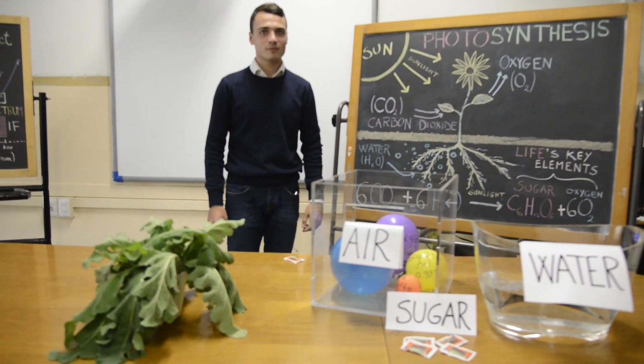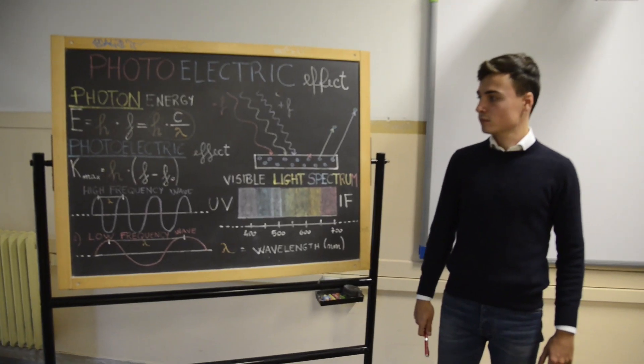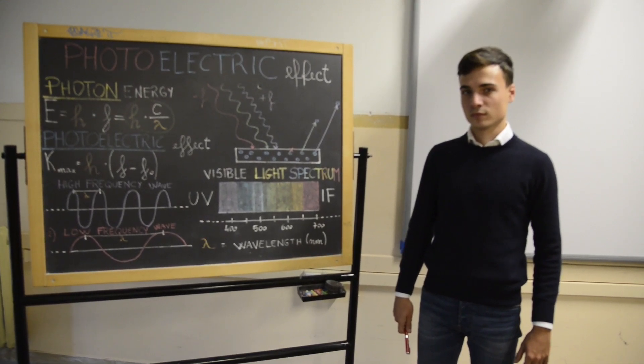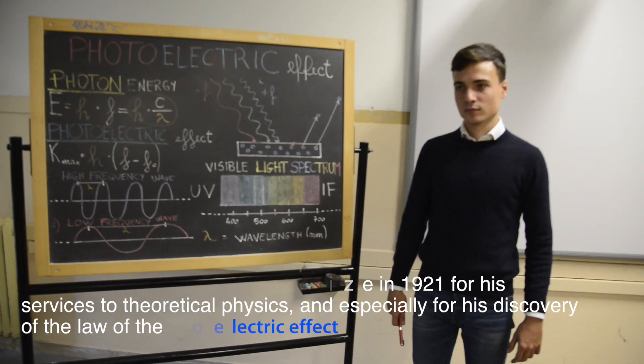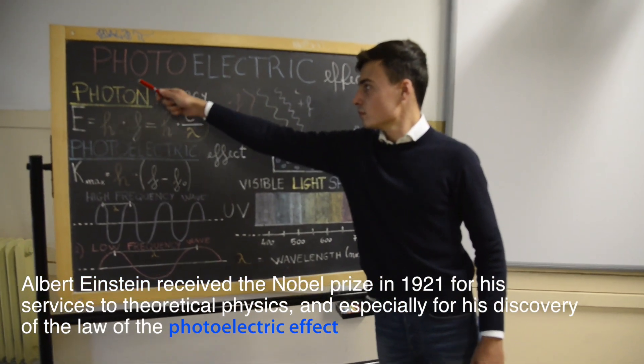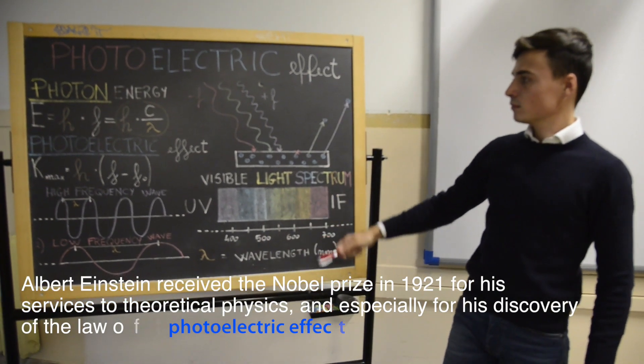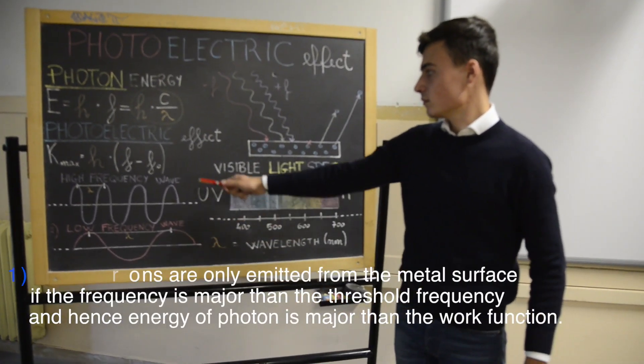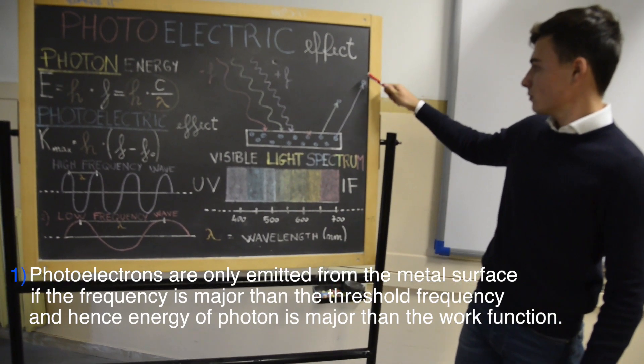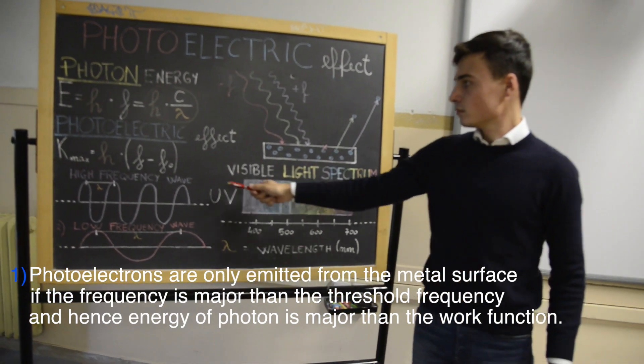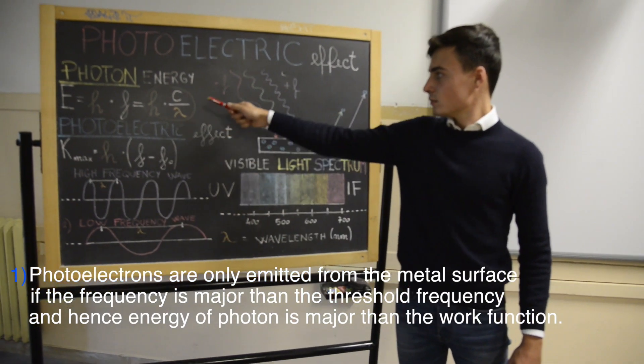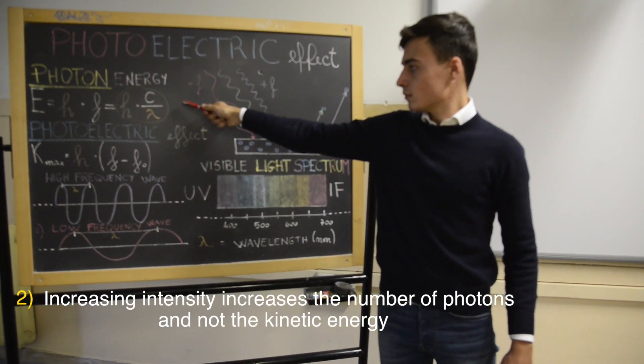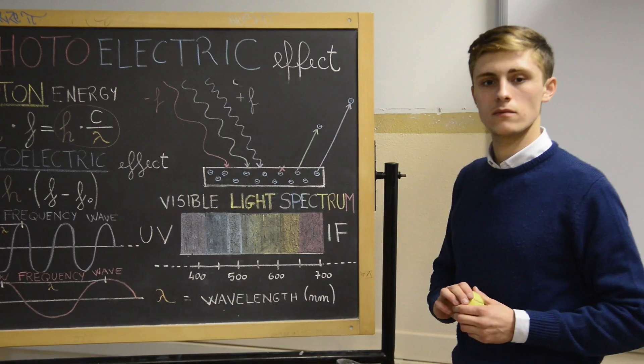and then we just need the sunlight and a bit of patience and that's it. Einstein is largely recognized today for his special theory of relativity, but he did not win the Nobel Prize for this theory, however. He won the award for a less unknown discovery called the photoelectric effect, which then helped developing the nowadays solar panels. The first postulate says photoelectrons are only emitted from the metal surface if the frequency is major than the threshold frequency and hence energy of photon is major than the work function. The second postulate says increasing intensity increases number of photons and not the kinetic energy.